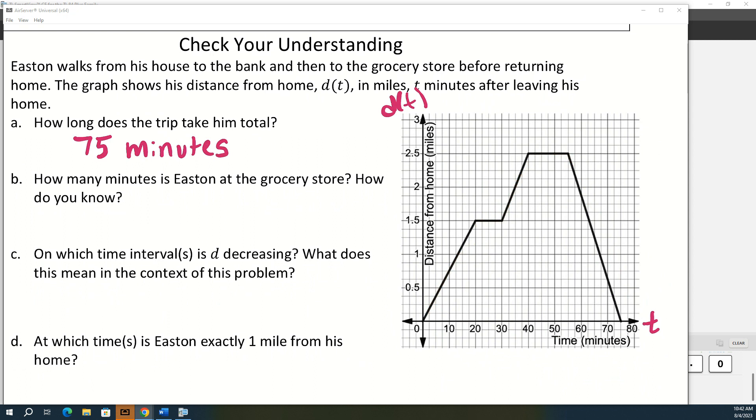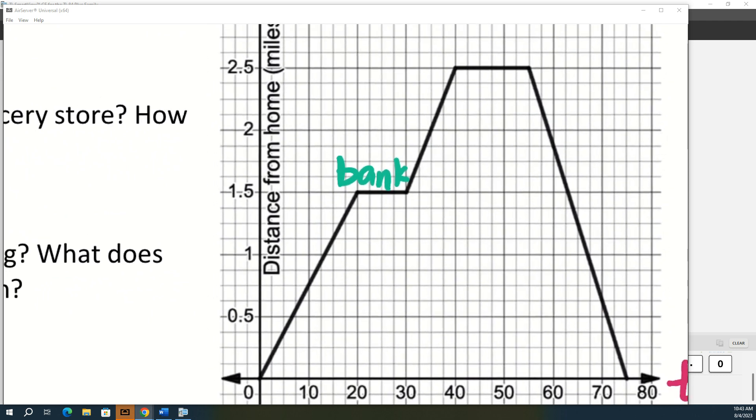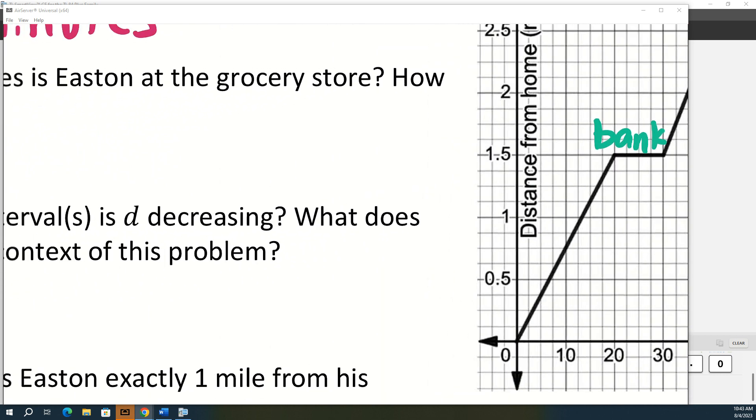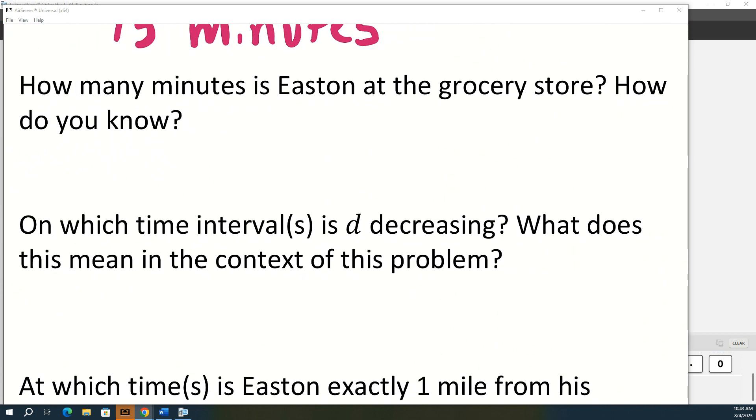How many minutes is Easton at the grocery store? So where do you go first? The bank. So this first flat section is the time he spent in the bank, and then the second flat section is the time he spent in the grocery store. So here and there between 40 minutes and 55 minutes. So the question was how many minutes? So we're going to say 15 minutes.